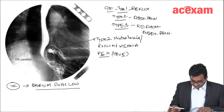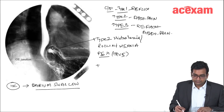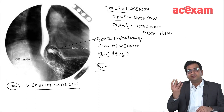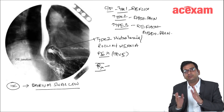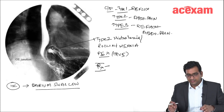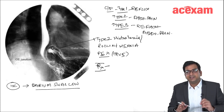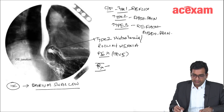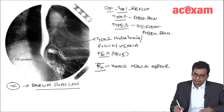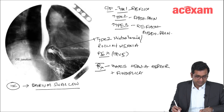What is the treatment? We will have to reduce the hernia first, then repair the defect. The defect is between the crura and the diaphragm, so this repair is also known as cruroplasty or diaphragmatic repair. If the defect is large, we will place a mesh to cover the defect. Along with that, we prefer doing a fundoplication. So the treatment is hiatus hernia repair with fundoplication.